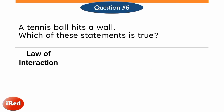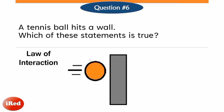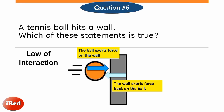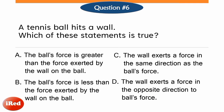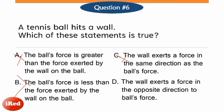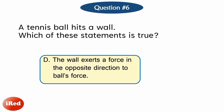Newton's law of interaction tells us that when the tennis ball hits the wall, the wall exerts an equal and opposite force on the ball. Options A and B are both false because the forces exerted by the ball and the wall are equal in magnitude. Option C is also false because, though these forces are equal in magnitude, they act in opposite directions. The force of the ball is towards the wall while the force exerted by the wall is towards the ball. So option D is correct: the wall exerts a force in the opposite direction to the ball's force.